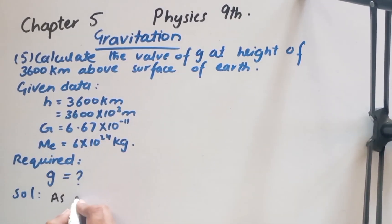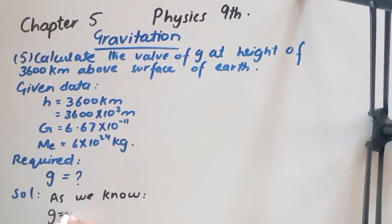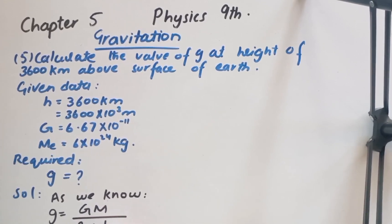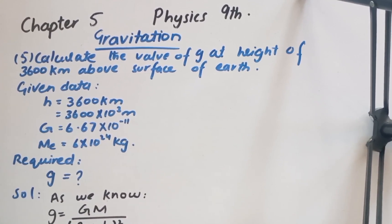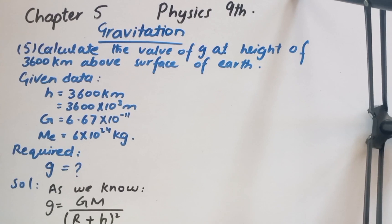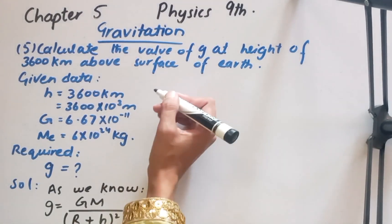To start the solution, as we know the formula: gravitational acceleration g is equal to gravitational constant G multiplied by mass of earth, over the quantity (radius plus height) squared. Now I will put all the given values into the formula.